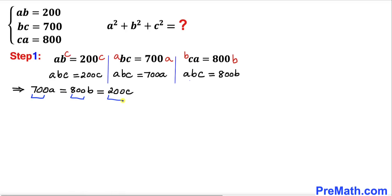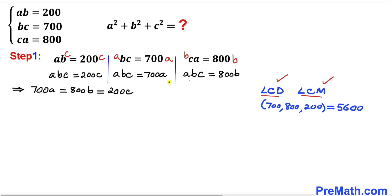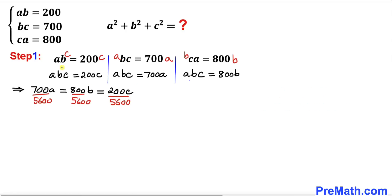Now let's focus on the numbers 700, 800, and 200. The least common multiple of all three is 5600. Dividing across the board by 5600, the first fraction reduces to a/8, the second to b/7, and the third to c/28. So we have a/8 = b/7 = c/28.